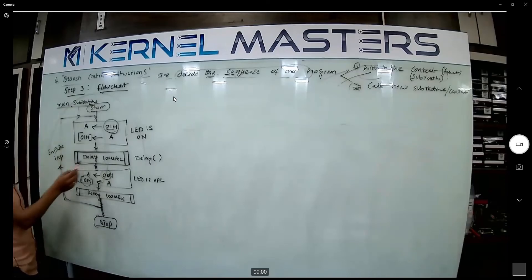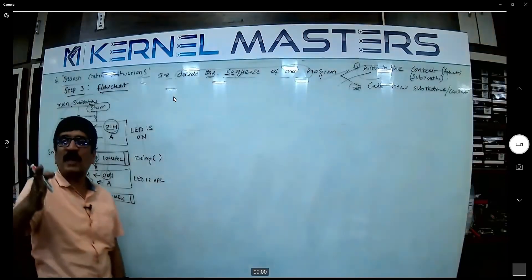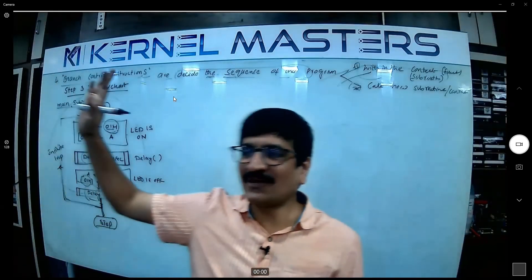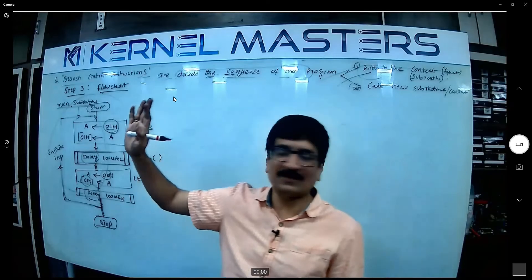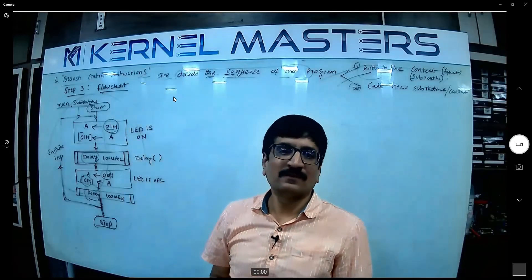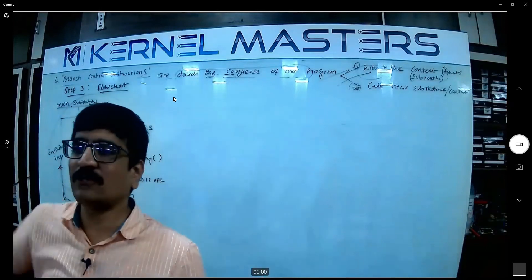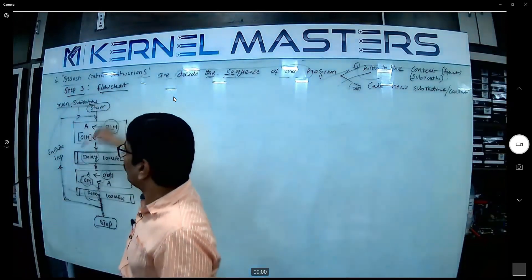Okay, main subroutine invokes which function? Delay. And every function has separate subroutine, separate flowchart, separate what? Flowchart. Every subroutine now. Every subroutine has separate pseudocode, separate what? Flowchart. This is main subroutine. You know multiple subroutines are there, right?